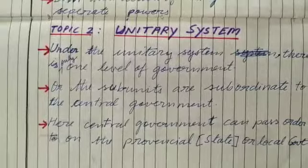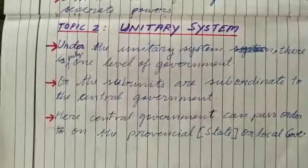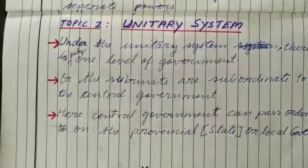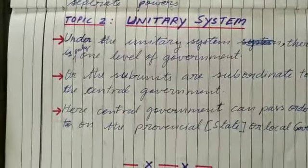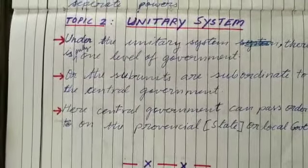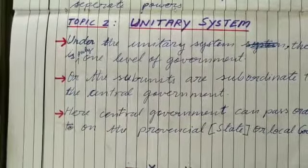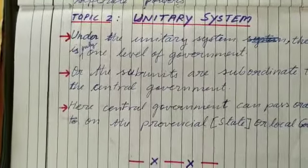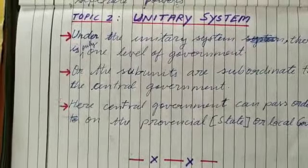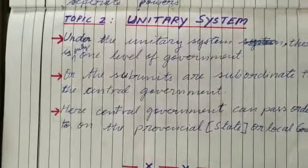Now what is this unitary system of governance? Under the unitary system, there is only one level of government, or the subunits are subordinate to the central government. Here, the central government can pass orders on the provincial, that is the state, or local governments.